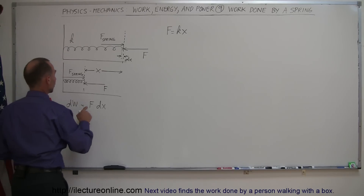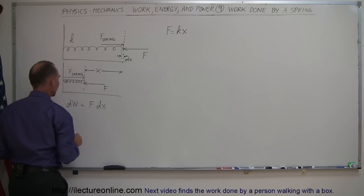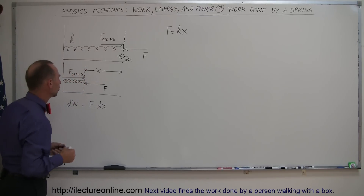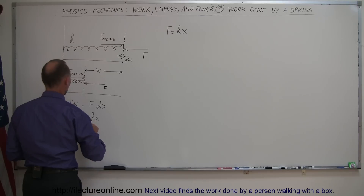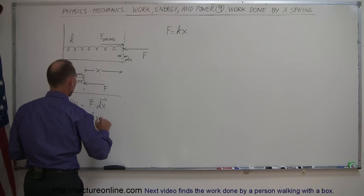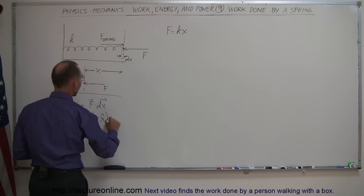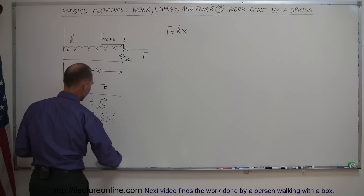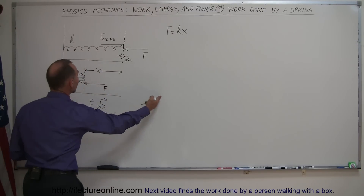The direction of the force is to the left, and the direction of displacement is also to the left, so they're in the same direction. We take the dot product: the force is minus kx in the x-direction (negative because it points left), and the displacement is minus dx in the x-direction (also negative, moving right to left).